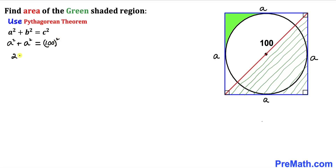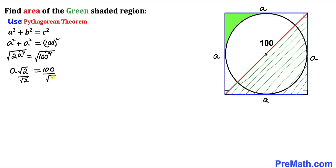So we get 2a² = 100². Let's go ahead and take the square root on both sides. The square and square root cancel each other, so we get a times √2 = 100. Let's divide both sides by √2 to isolate a, giving us a = 100 / √2.